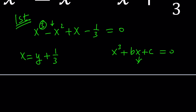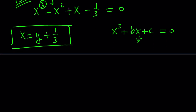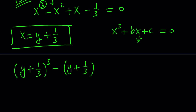And of course, I need to change the variable, so I use y. You can use any variable you want. So let's go ahead and replace x with y plus one third. That gives us y plus one third to the third power minus y plus one third to the second power plus y plus one third minus one third equals zero. One third cancels out.